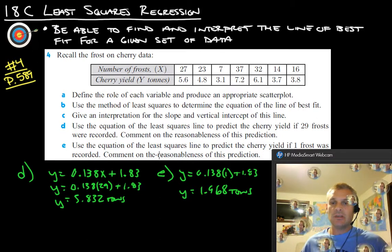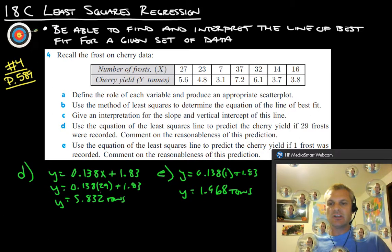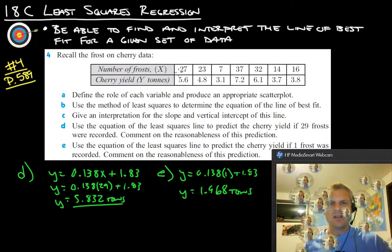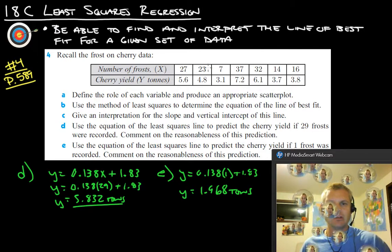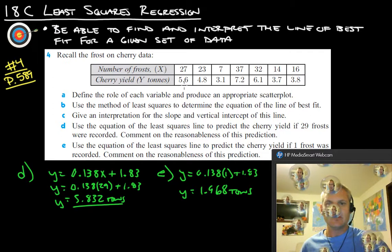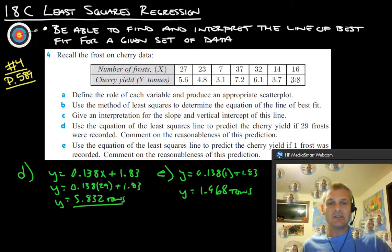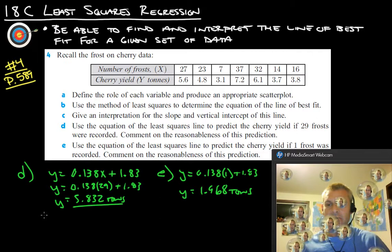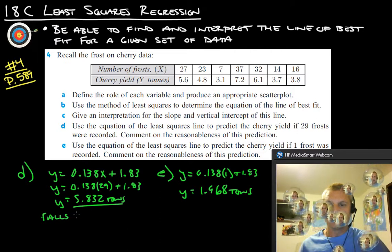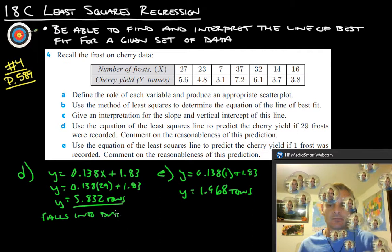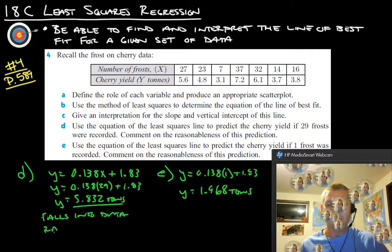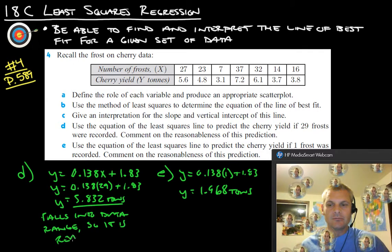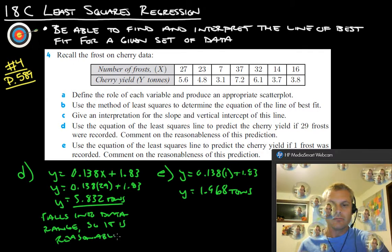One thing I forgot to do on D that we want to do on D and E is this comment on the reasonableness of this prediction. So we have 5.832 tons off of 29 frosts here. So 29 would fit in this range here. And then the 5.83, let's see, that looks like that fits in this set of data here too. So this is reasonable, this falls into the data range, so we consider this reasonable. So falls into data range. So it is reasonable.